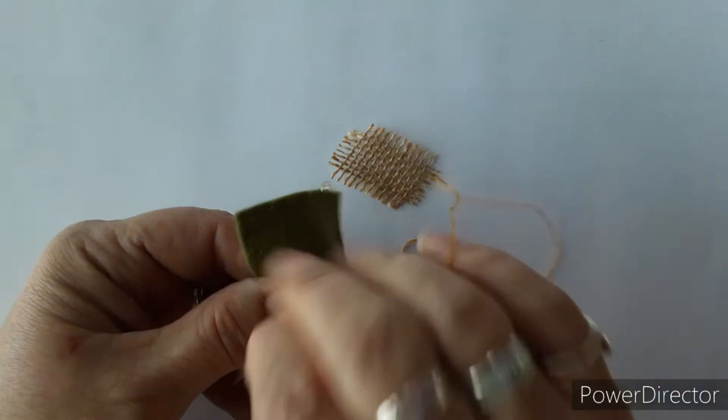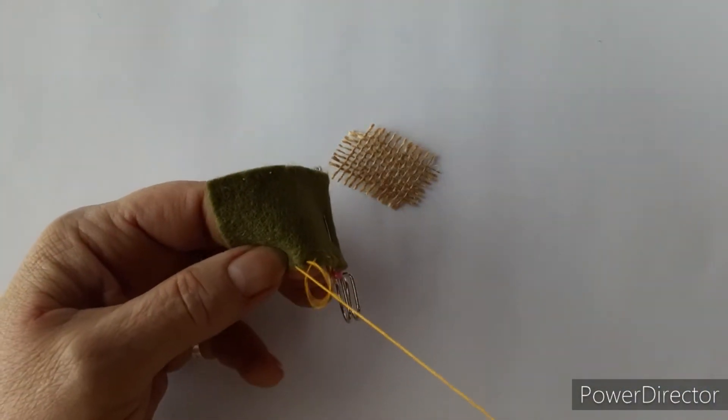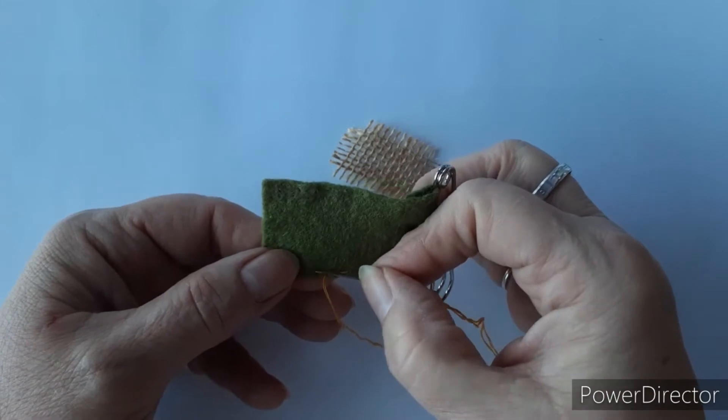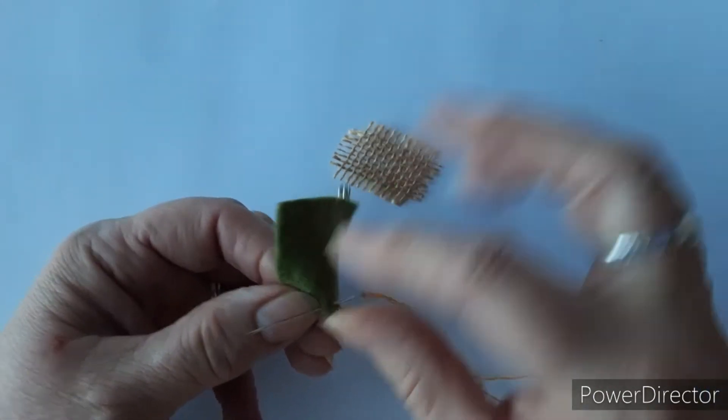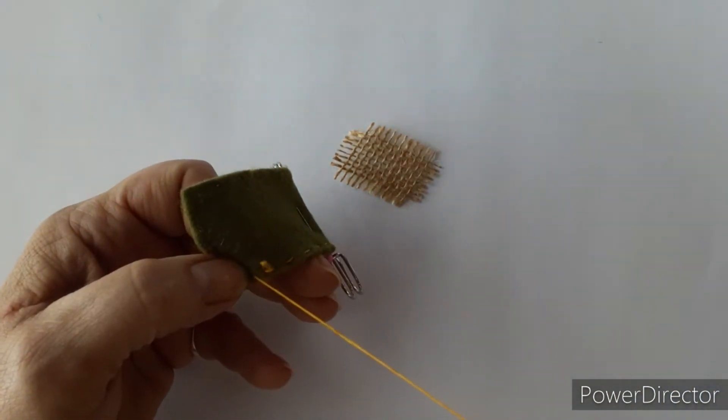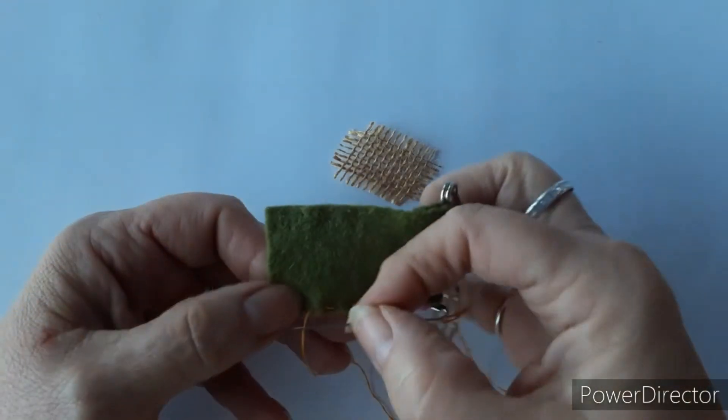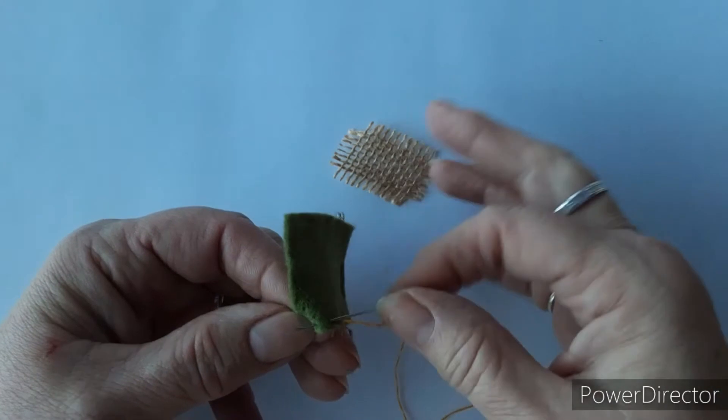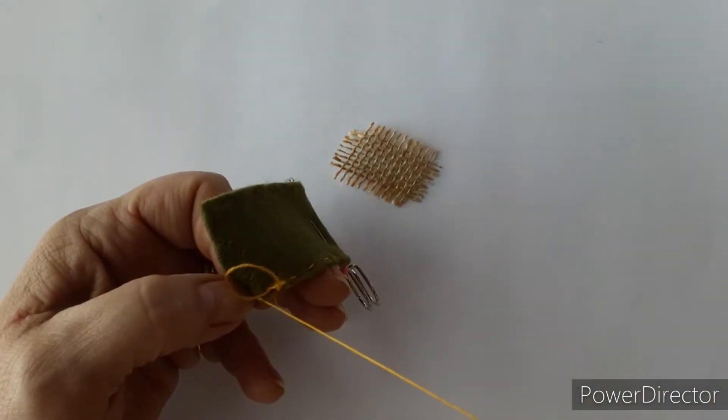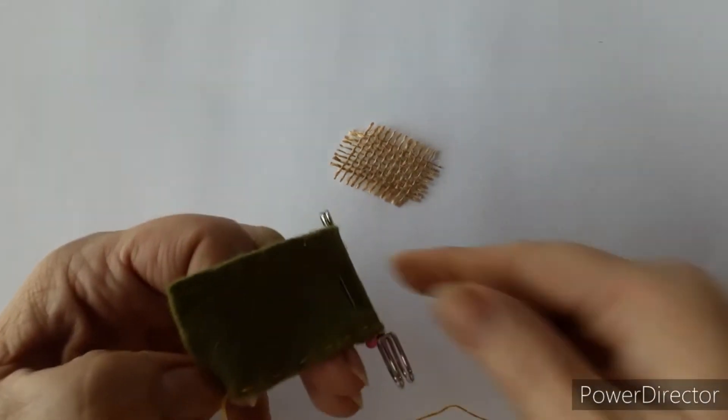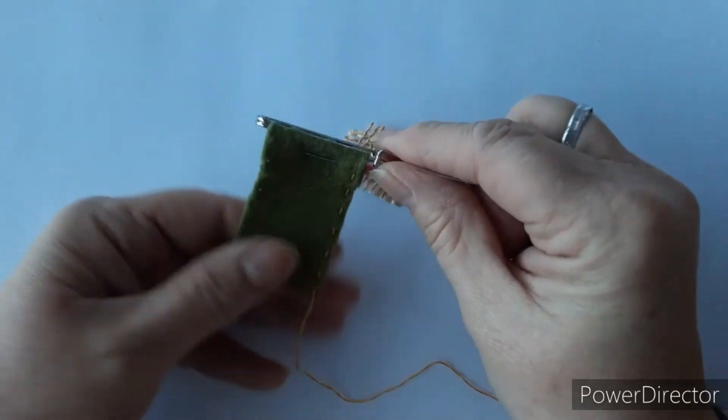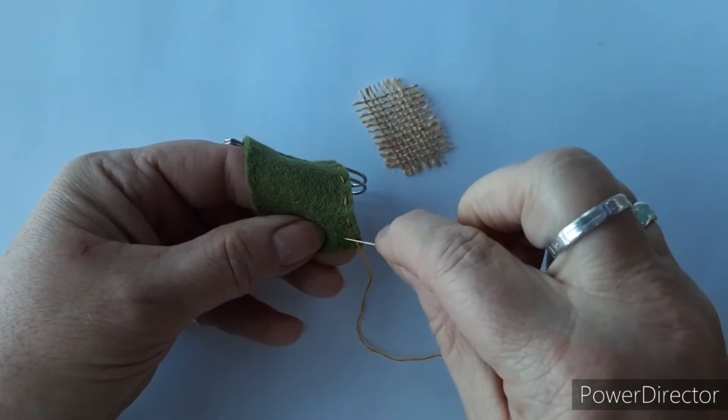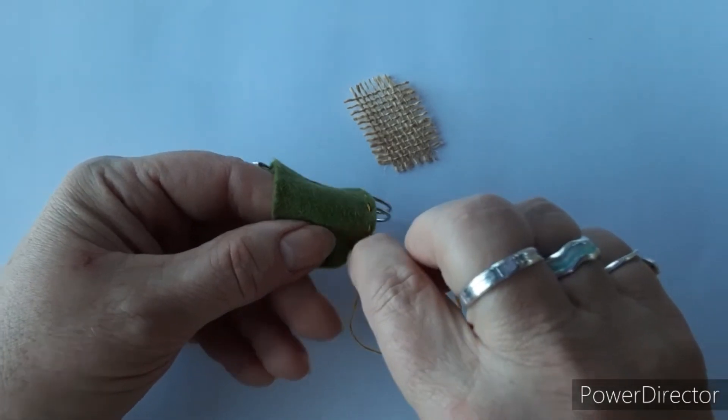You don't have to do running stitch, you could do any decorative stitch. Blanket stitch would be nice. You could even do maybe stem stitch or chain stitch. If you want to look, we have done some of these sewing tutorials so you can see which of the stitches you might like to do.